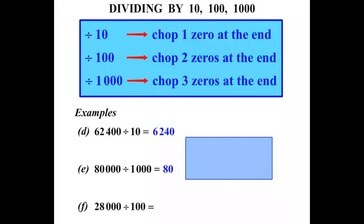28,000 divided by 100. So the 28,000 let's write that down. Dividing by 100. We're going to chop two zeros off at the end. So there they are. Two zeros. Let's cross them out. We are left with 280 as our answer.